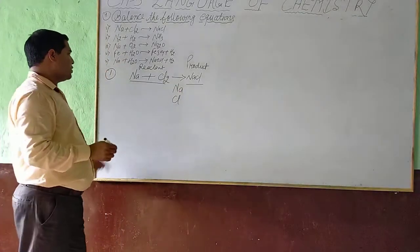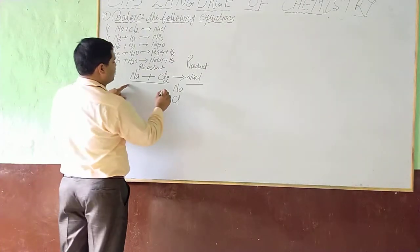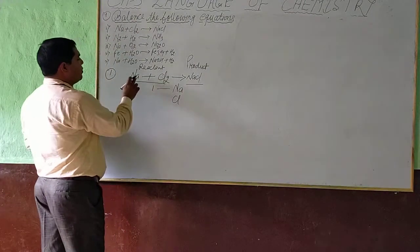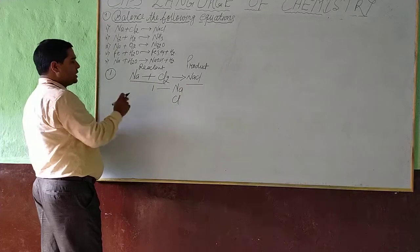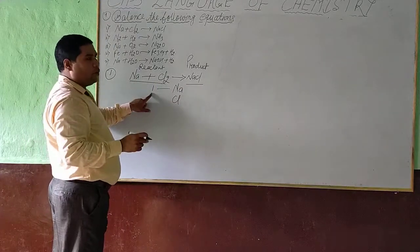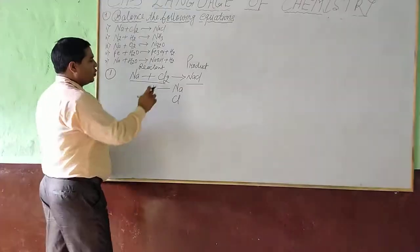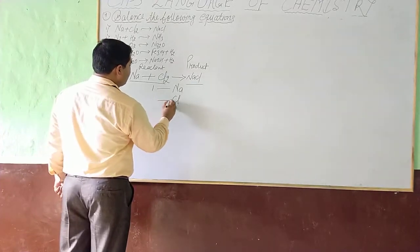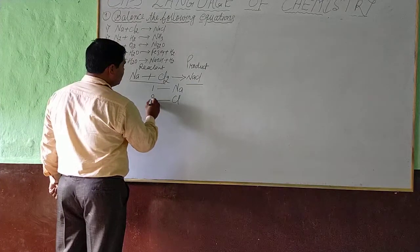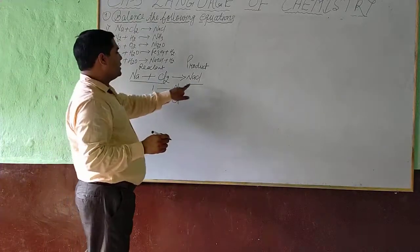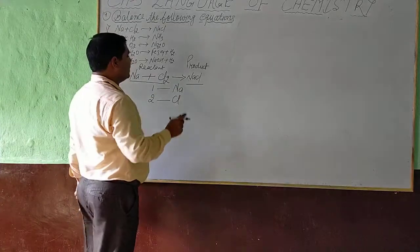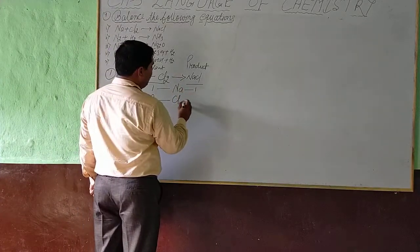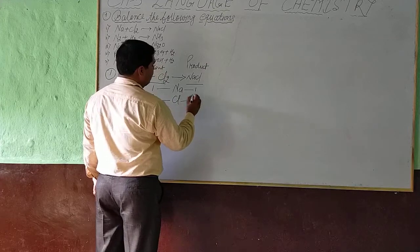So now we will count the numbers. Sodium — only one; no number is written, so we put one. Chlorine — Cl₂, so the number of atoms in chlorine is two. On the product side NaCl, there is no number written, so sodium is one and chlorine is one.